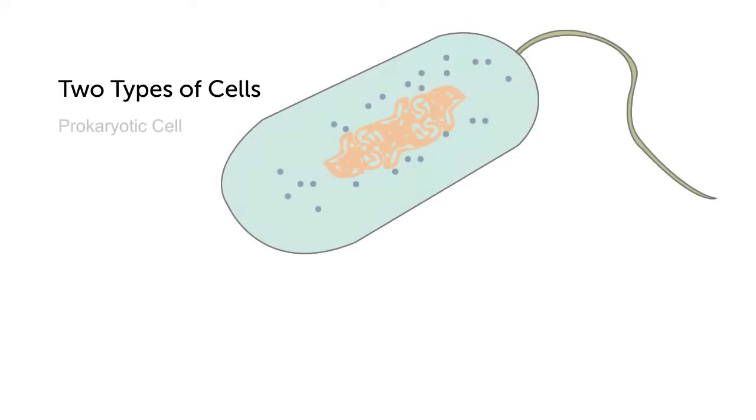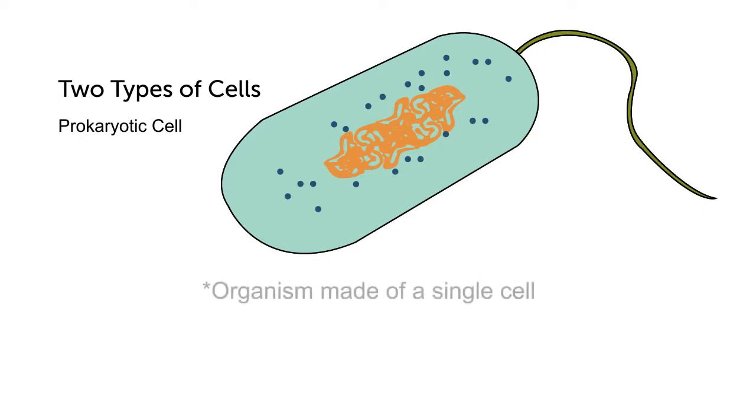There are also two types of cells. The most ancient and basic type of cellular organism is a prokaryotic cell. Prokaryotic cells are organisms that are made up of a single cell.